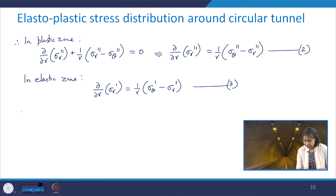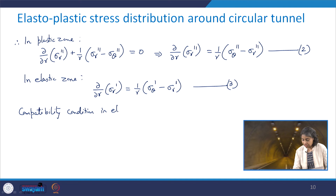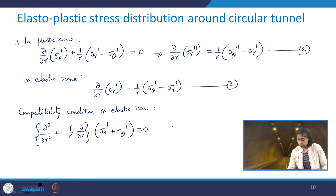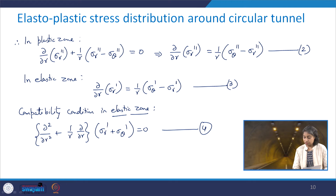The compatibility condition in the elastic zone is: (d²/dr² + (1/r)(d/dr))(sigma_r prime + sigma_theta prime) = 0, because we are talking about the elastic zone and using stresses with the single prime notation. These equations are to be satisfied subjected to appropriate boundary conditions.